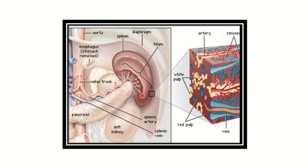In this picture we can see the hilum of the spleen, through which the splenic vein and splenic artery pass along with the tail of the pancreas. The tail of the pancreas is also located at the level of the hilum of the spleen. Other related structures include the kidney, stomach, and diaphragm.